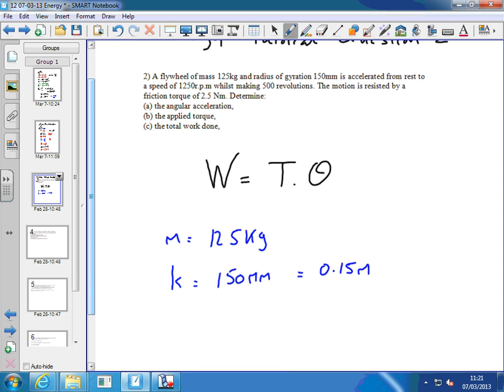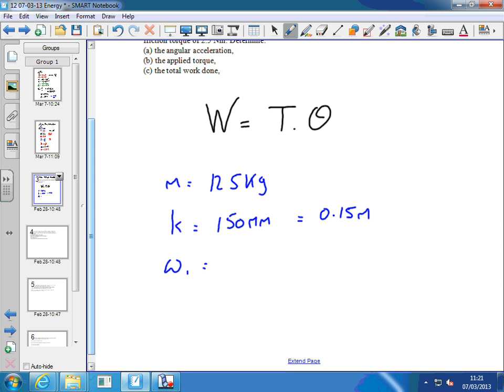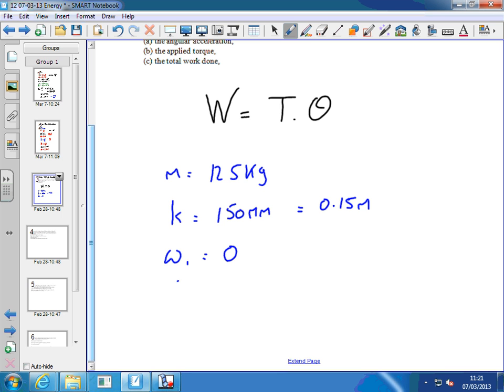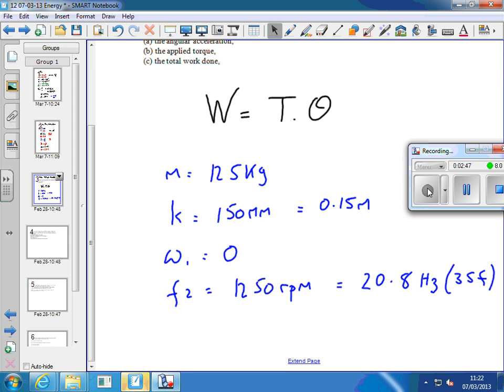It's accelerated from rest. So what does that tell us? It tells us that omega one is naught. And then it accelerates to a speed of 1250 RPM. Now that speed is not really a speed, is it? What are we given there? Yeah, we're given the frequency, aren't we? So actually we're told the frequency at the start equals 1250 RPM. So straight away I need that in hertz. So that's 1250 divided by 60, which is 20.8 hertz to three significant figures, or revolutions per second. So we've now got the frequency in the right units.